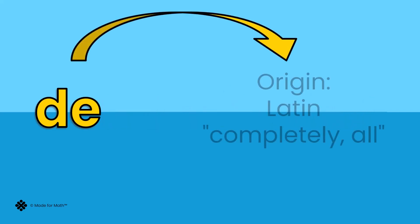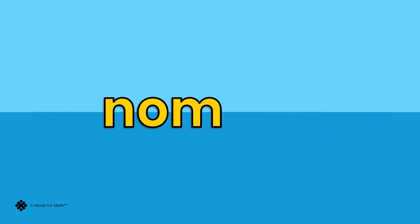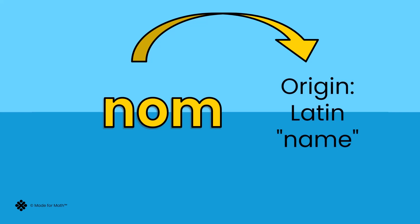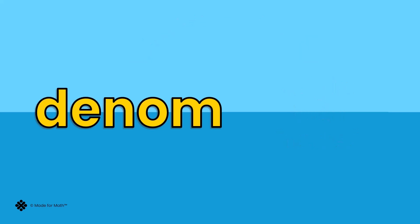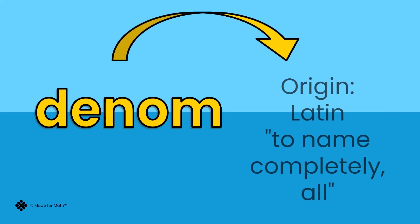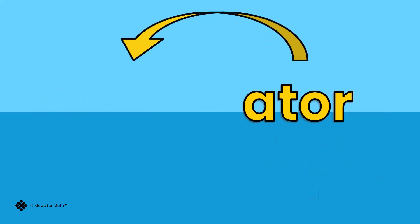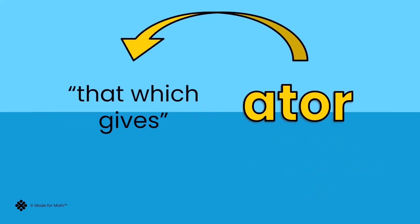Denominator. 'De' comes from Latin meaning completely or in all. 'Nom' comes from Latin meaning name. Let's put those pieces together: 'denom' comes from Latin meaning to name completely or in all. 'Ator' means that which gives the name.